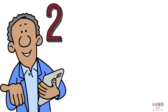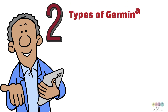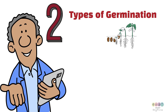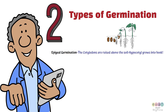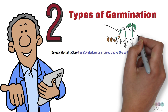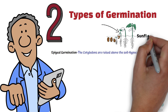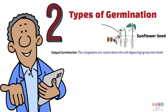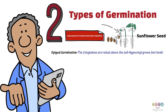There are two types of germination, and it is all to do with whether or not the cotyledons remain above or below the soil. Epigeal germination is when the cotyledons are raised above the soil. This is because the hypocotyl grows into a hook and pulls them upwards above the soil — this happens in sunflower seeds. The hypocotyl is the part of the embryo stem below the cotyledons, or where the cotyledons attach.